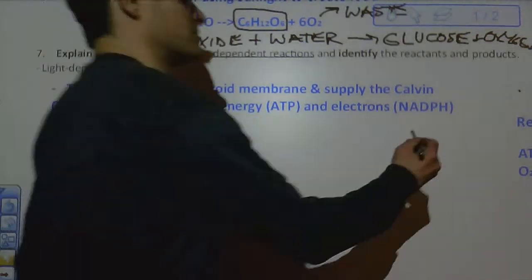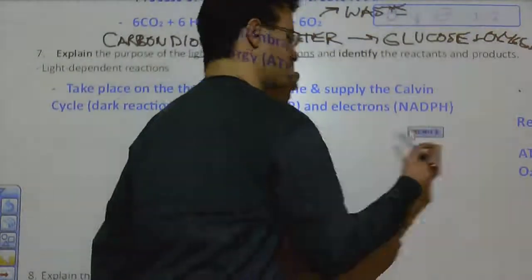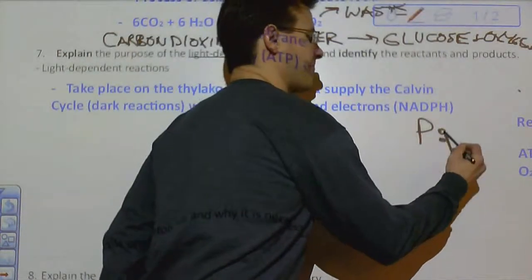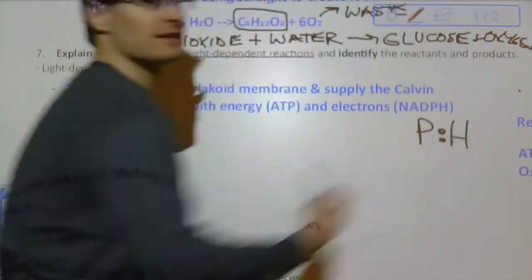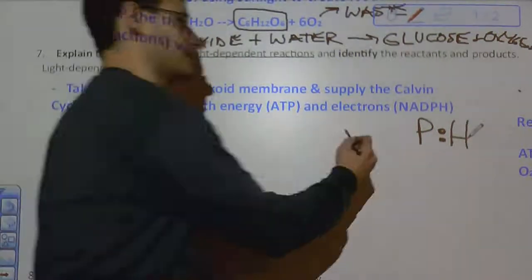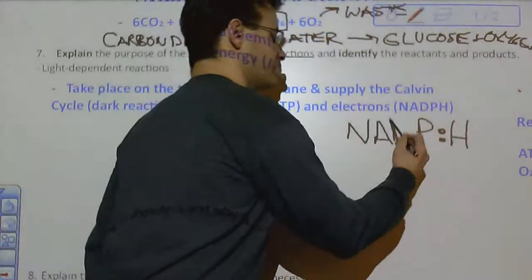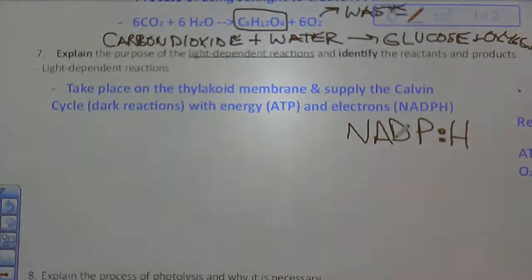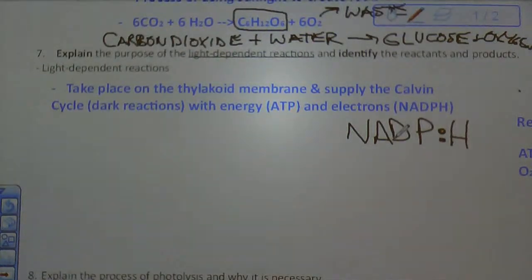And something you might want to add to this NADPH, between the P and the H there, I would put little dots to represent those two electrons that we're talking about. So NADPH dot dot H to show those electrons. It's important to recognize where the electrons are coming from when we get to the Calvin cycle a little bit later on.